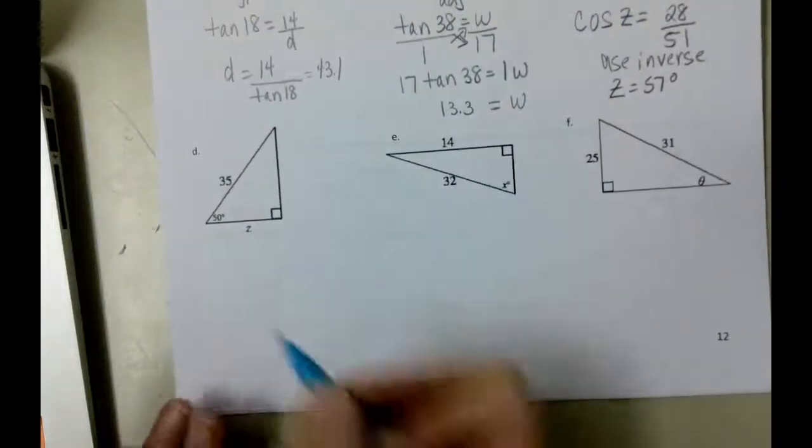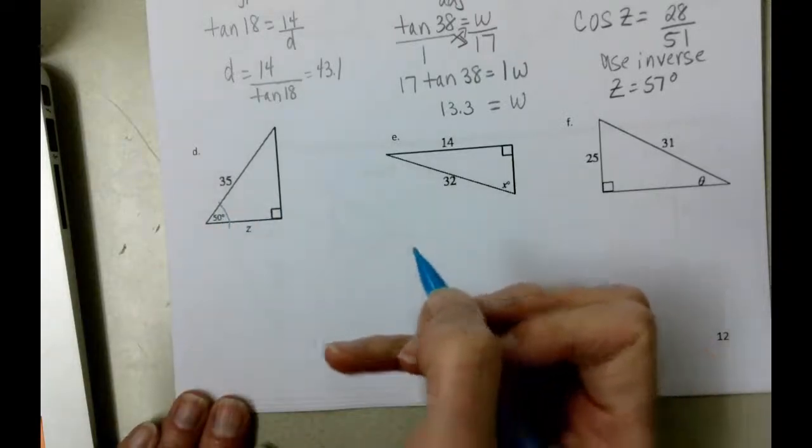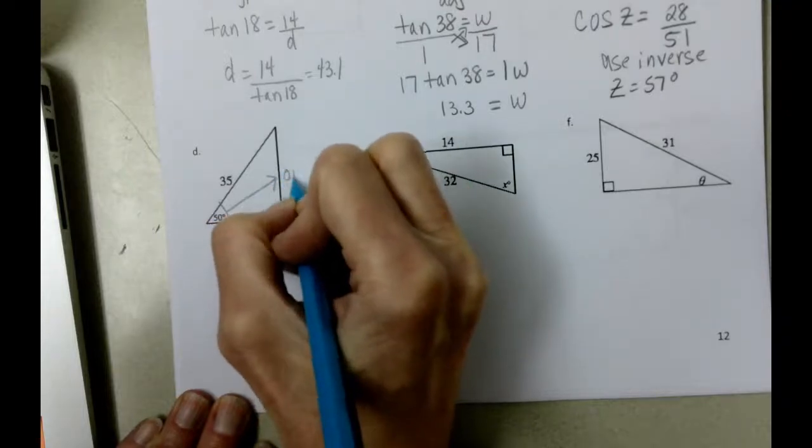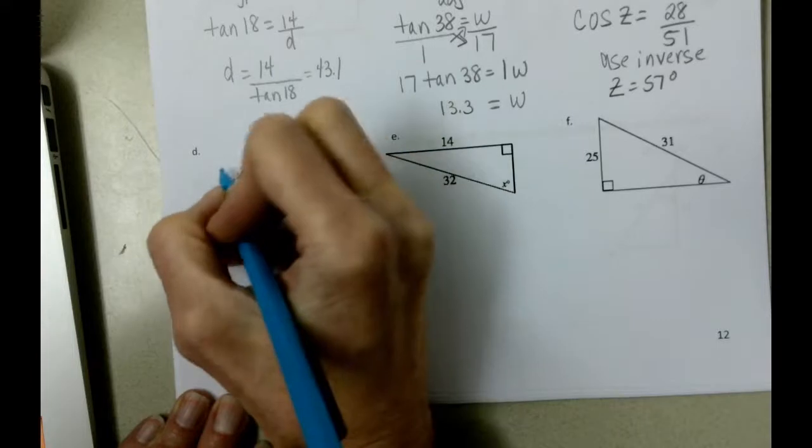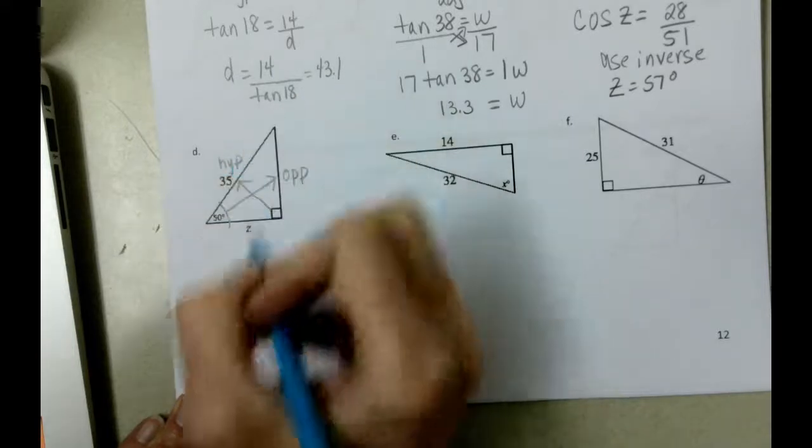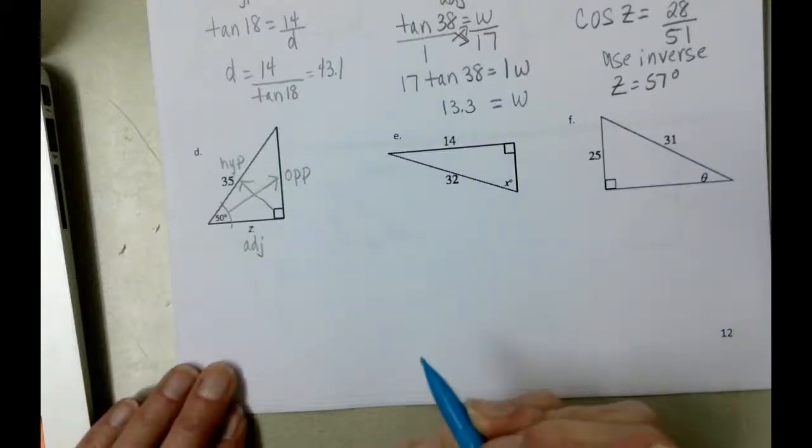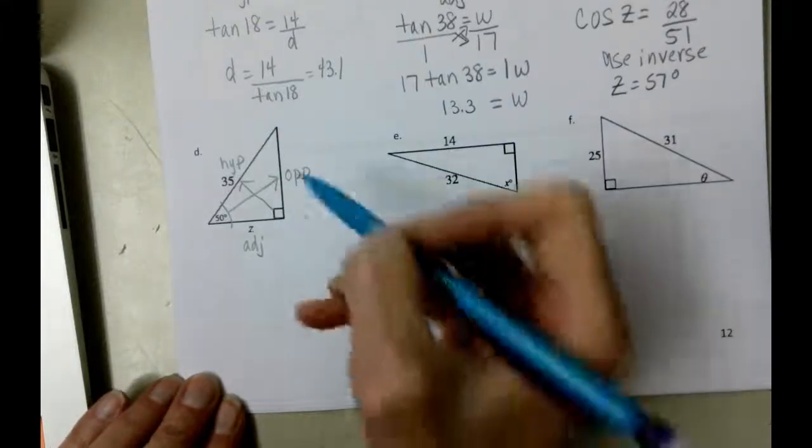Letter D. We know the angle again. We're working with the 50 degrees. We're going to come across here and there's our opposite. Here's our hypotenuse, which means that this is the adjacent. And then we need to look and see which function to use.